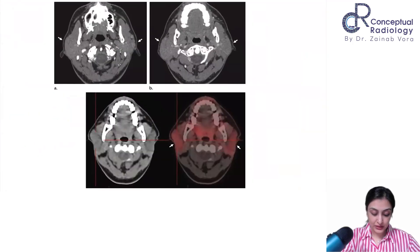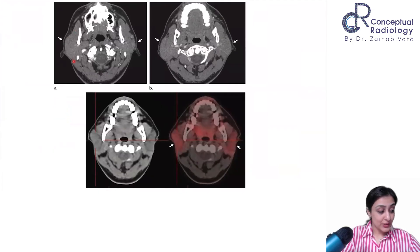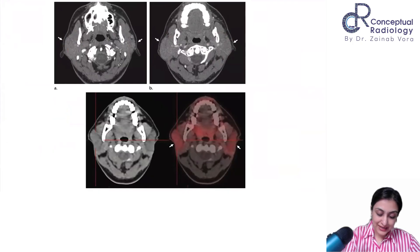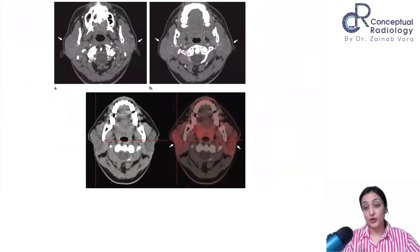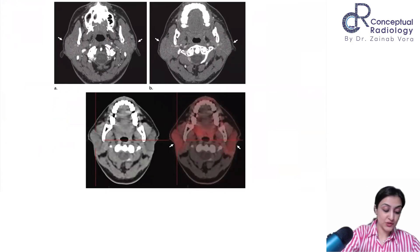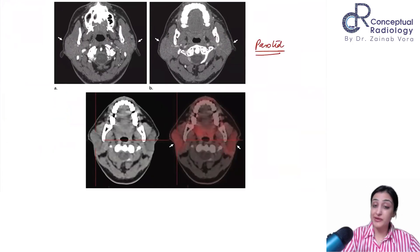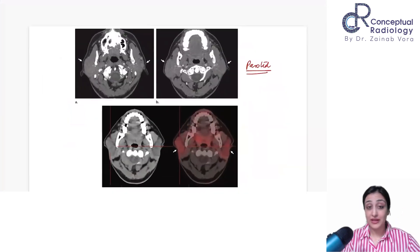Next case: bilateral parotid glands are bulky on imaging. PET scan shows uptake in both parotid glands because of inflammation. This is parotid gland involvement in IgG4.